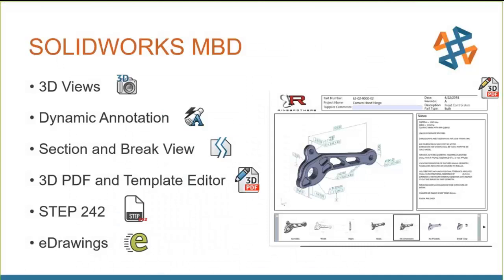With SOLIDWORKS MBD, we can organize only the information we need into 3D views. Dynamic annotations, section and break views reduce guesswork in communicating the design. The included 3D PDF publisher and template editor give us full control over the PDF layout. SOLIDWORKS MBD also allows import and export of STEP 242 files and eDrawings — so if a CAM system requires STEP 242, you have that option, or you can use eDrawings if you prefer.